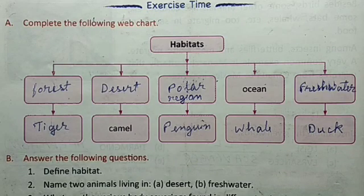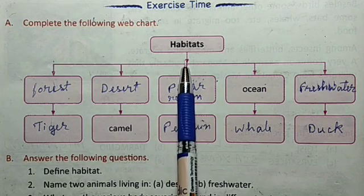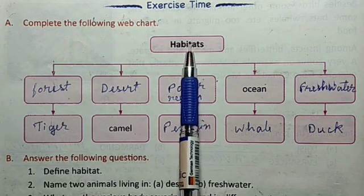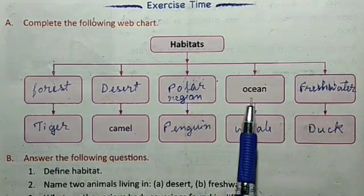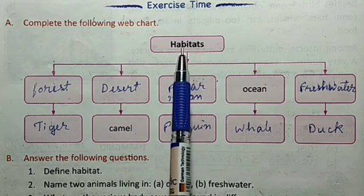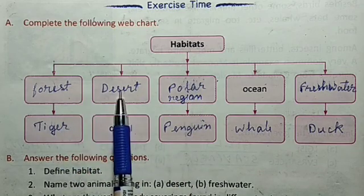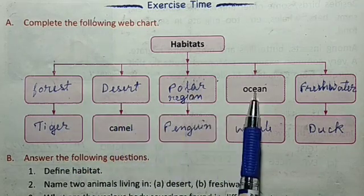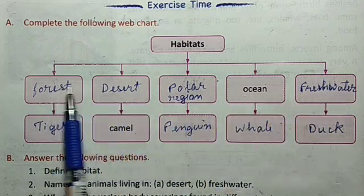Next, let's do the exercise time. In number A, it says to complete the following web chart. Let's go to the habitat. The five main habitats are: forest, desert, polar region, ocean, and fresh water.